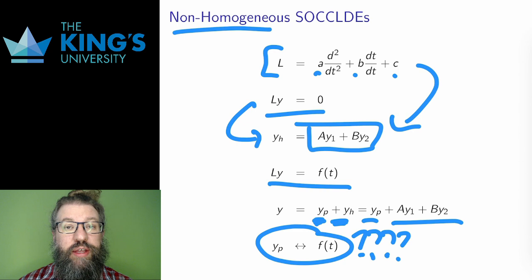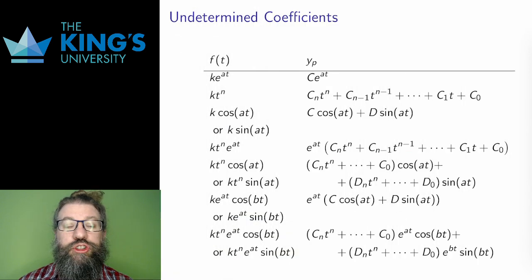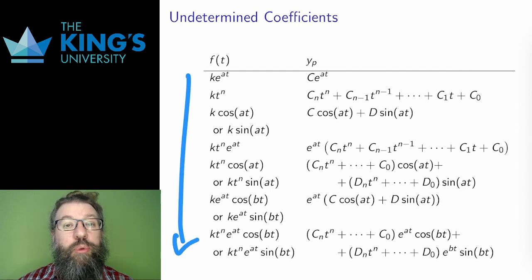The question is then, how does the particular solution relate to the forcing term? What kind of solution does the forcing term produce? For certain nice functions, I can assume the particular function solution will resemble the forcing term. And this sort of makes sense.